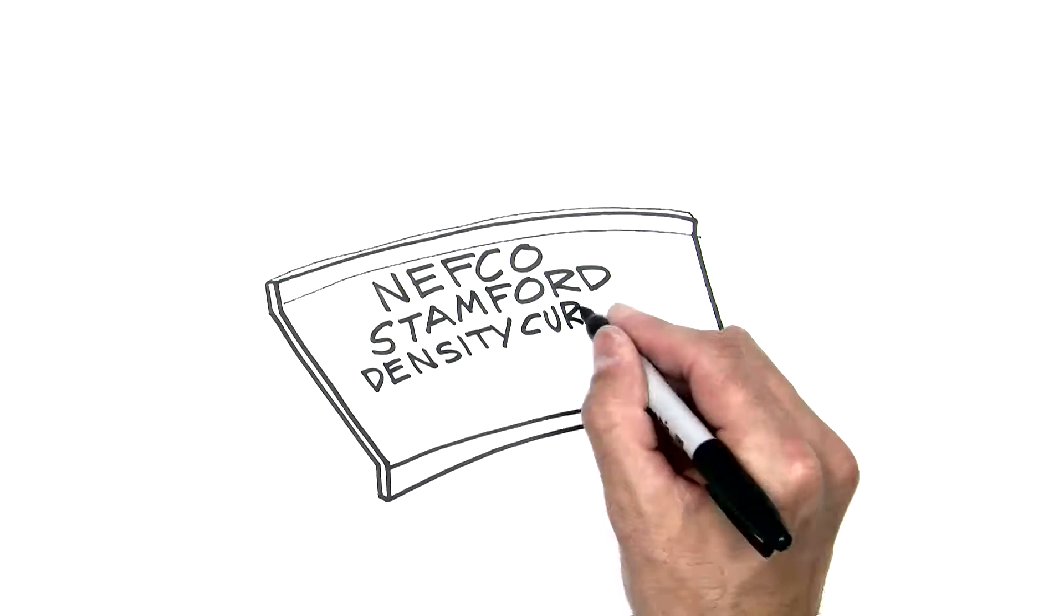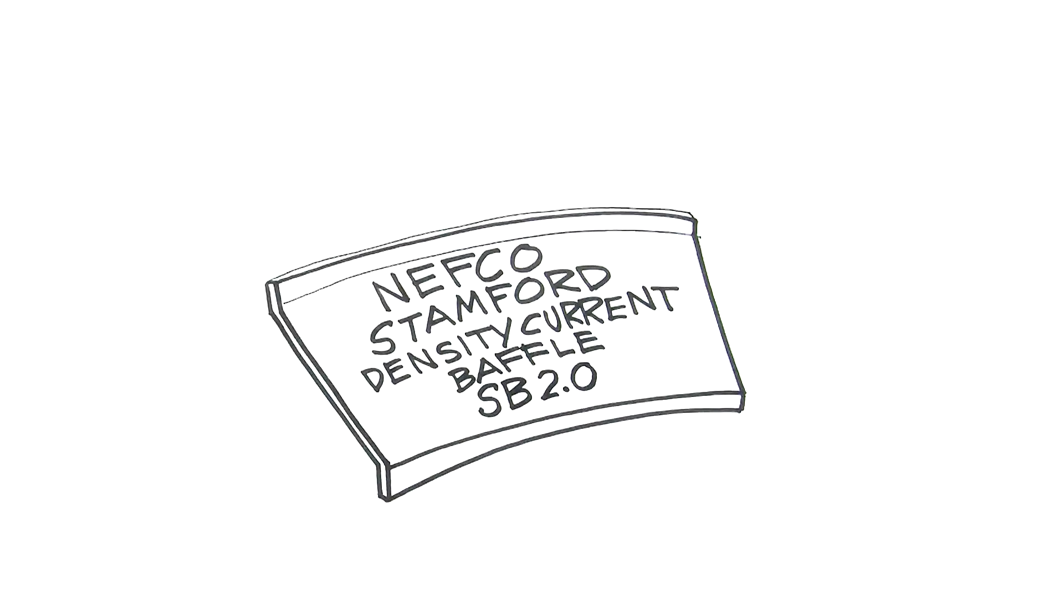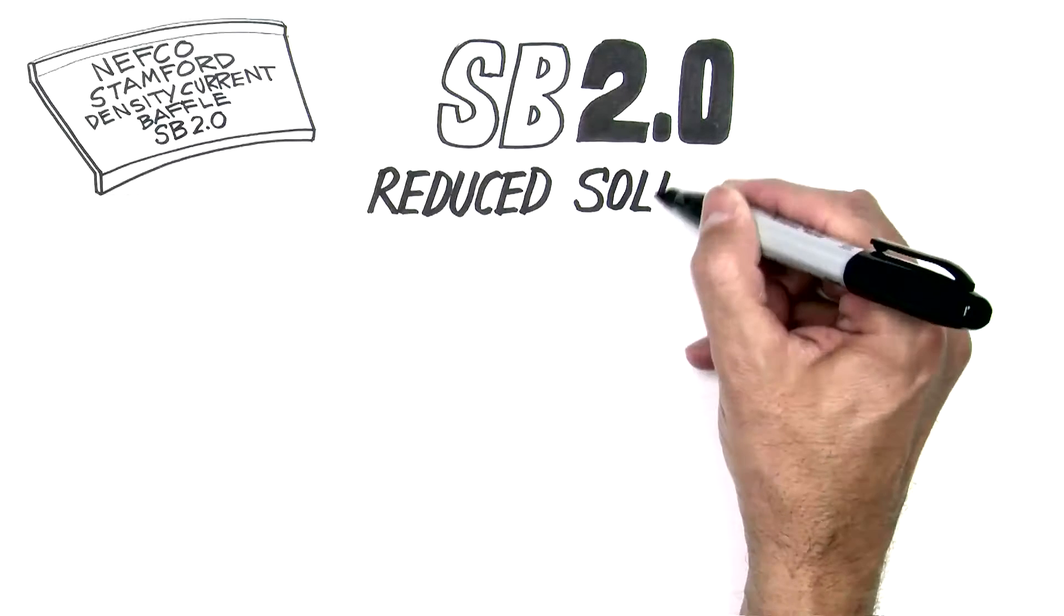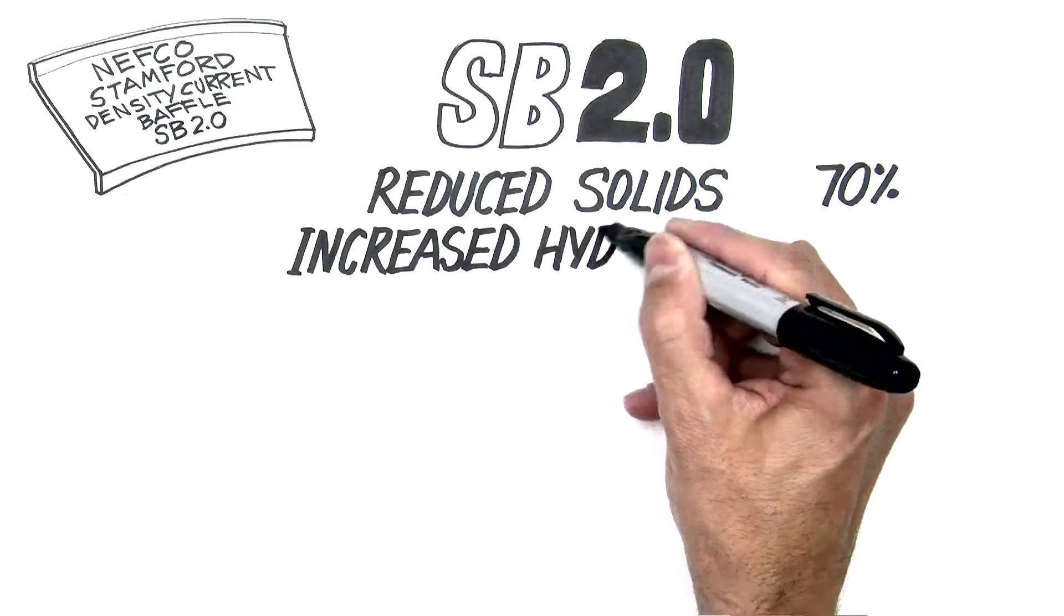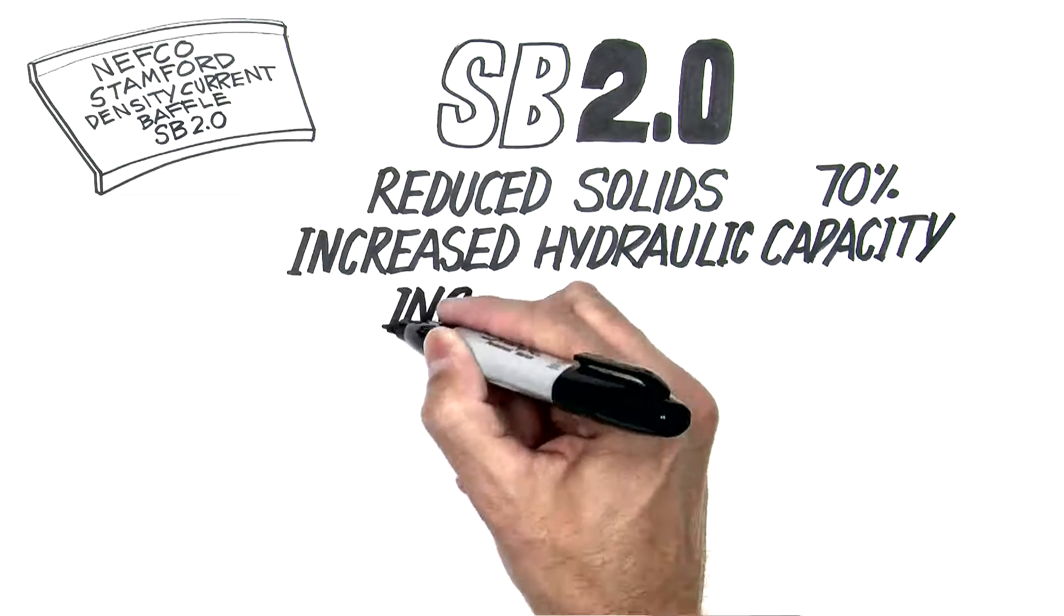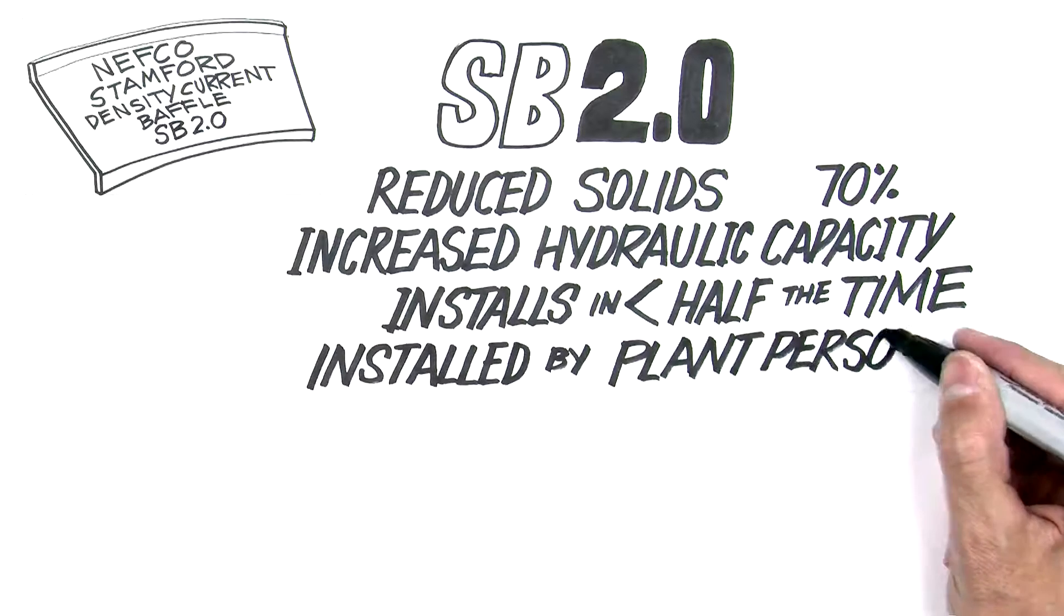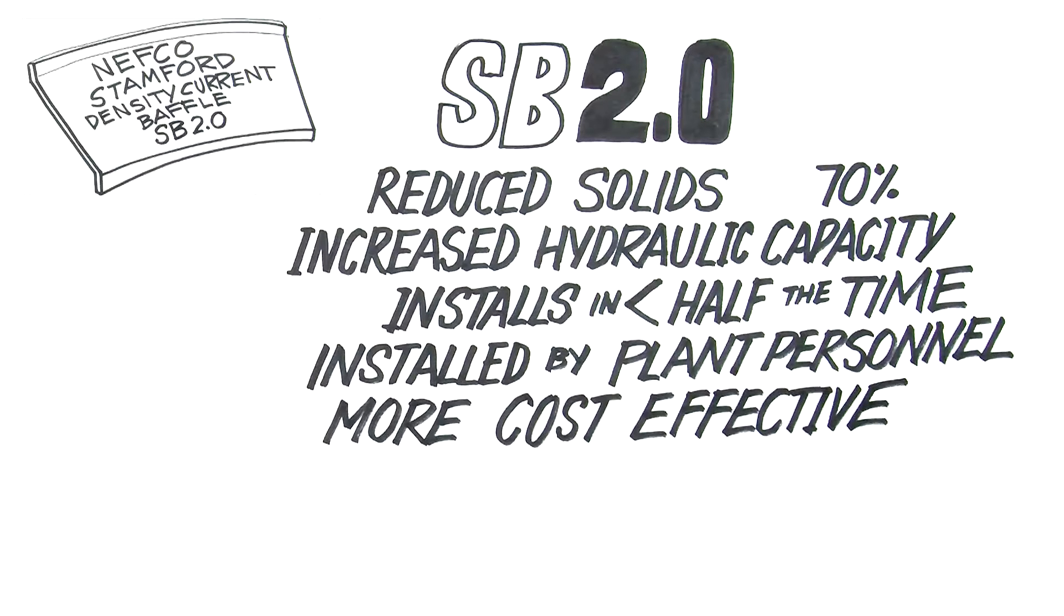So, would you say that all baffles are the same? If you said no, you're right. SB 2.0 reduces solids by 70% and increases your clarifier's hydraulic capacity, installs in less than half the time of any other baffle, can be installed by plant personnel, and is more cost-effective than any other baffle.